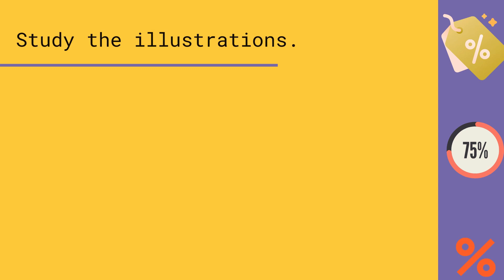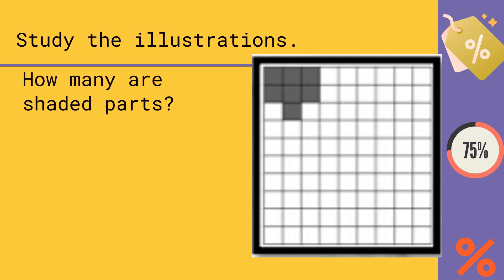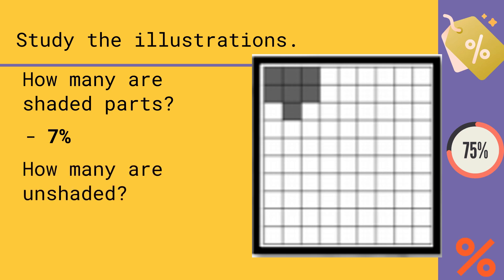Let us count how many are shaded parts: 1, 2, 3, 4, 5, 6, 7. So we have 7 shaded parts. Meaning, if we express this into percent — since percent is over 100 — 7 percent is the shaded part. For the unshaded: 100 minus 7 equals 93 percent.